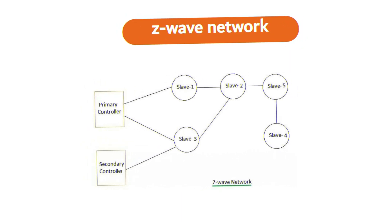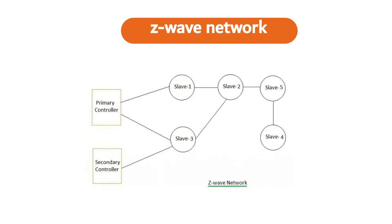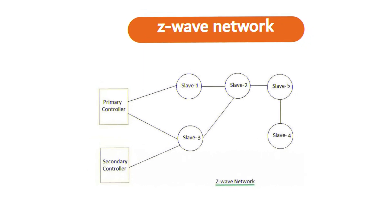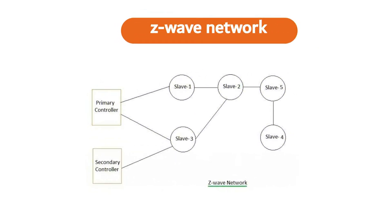Primary controller is the device that contains a description of the Z-Wave network and controls the output. It assigns network ID, home ID, or node ID to the Z-Wave device during the enrollment process. Secondary controller has a network ID and it remains constant to maintain routing tables. Slave nodes are the nodes that do not contain routing tables but may contain a network map. Slave nodes have the ability to receive frames and respond to them if necessary.